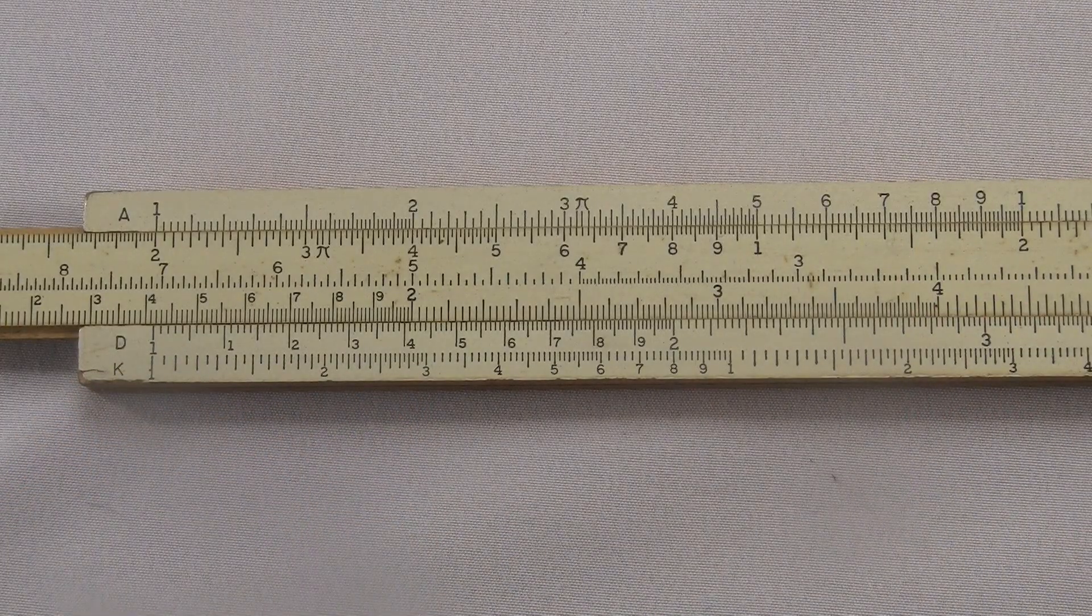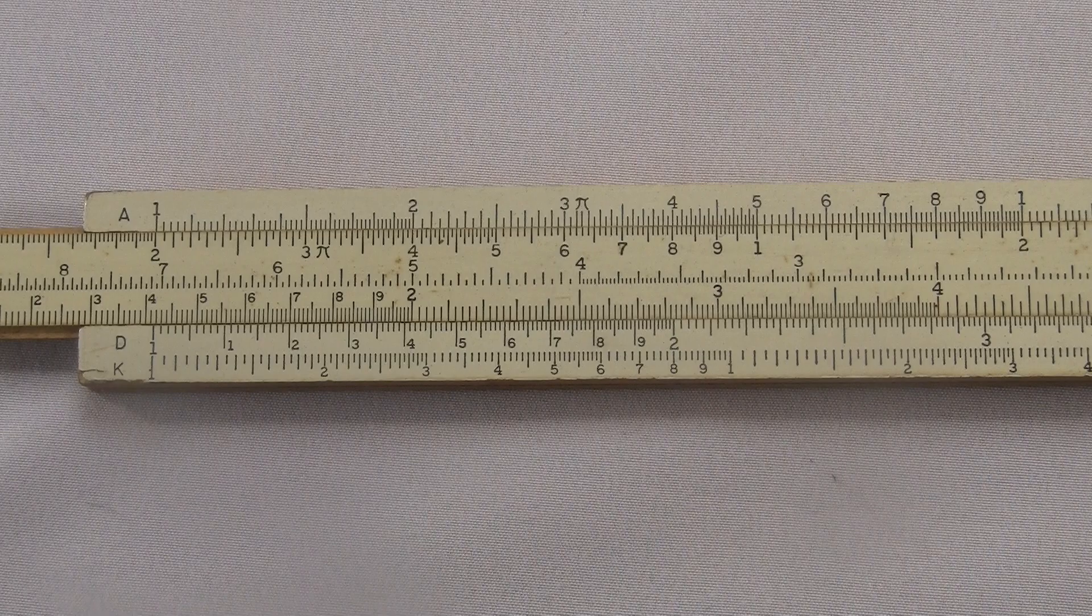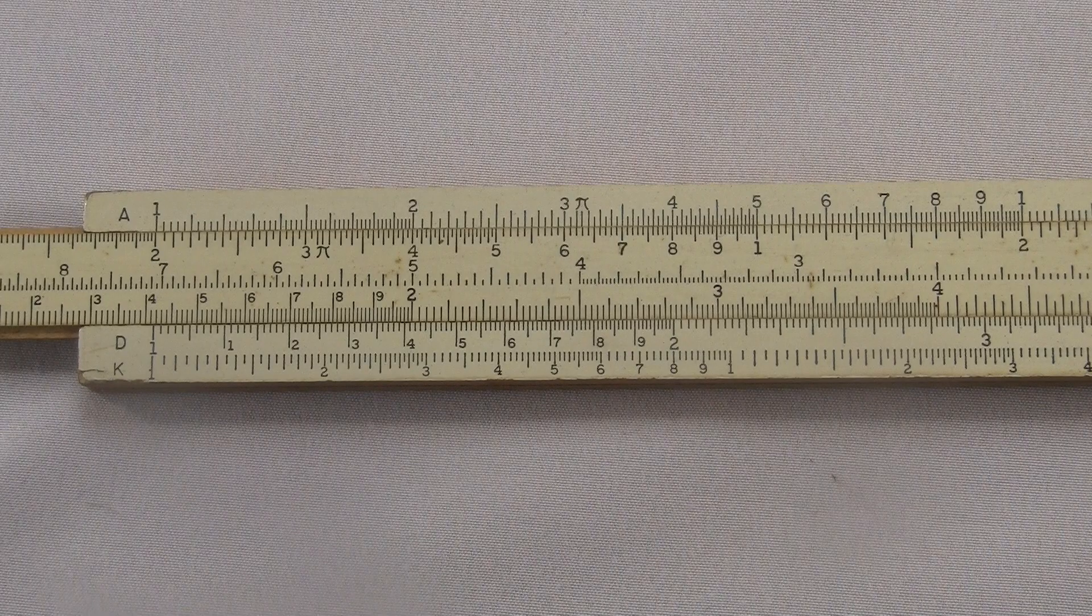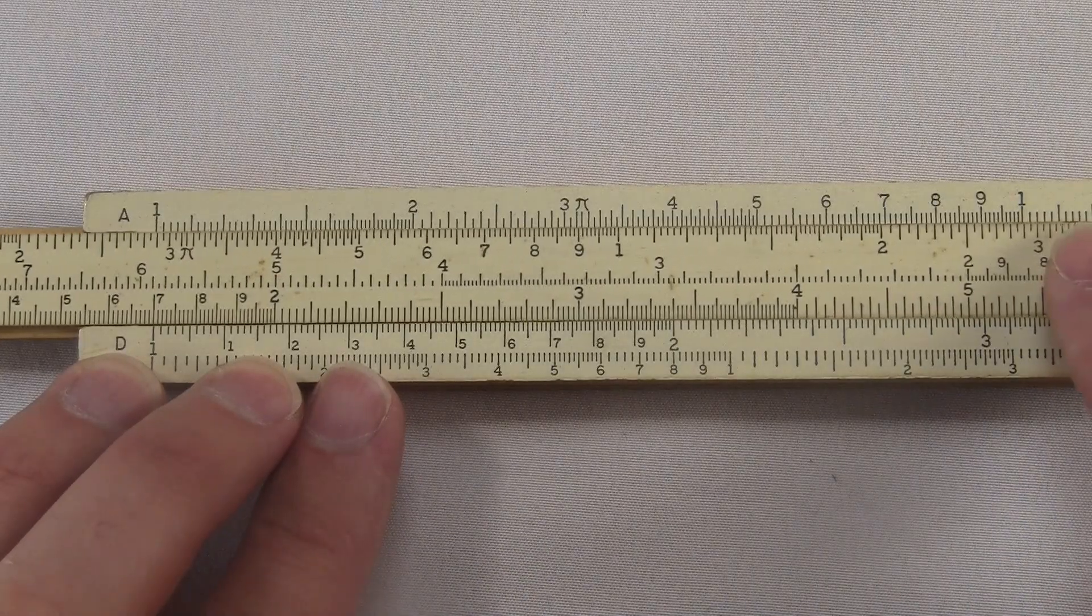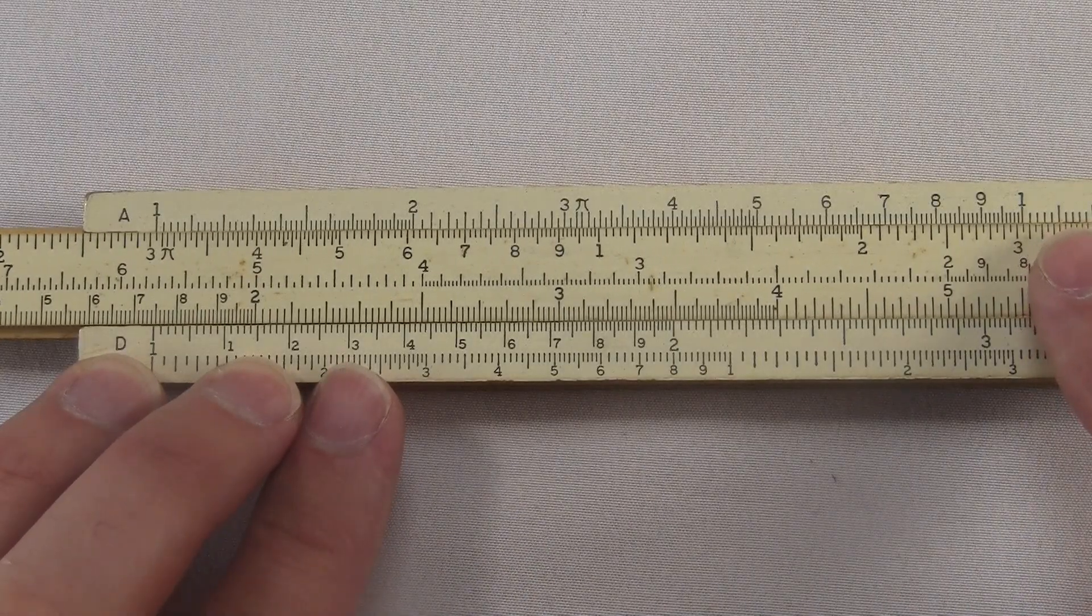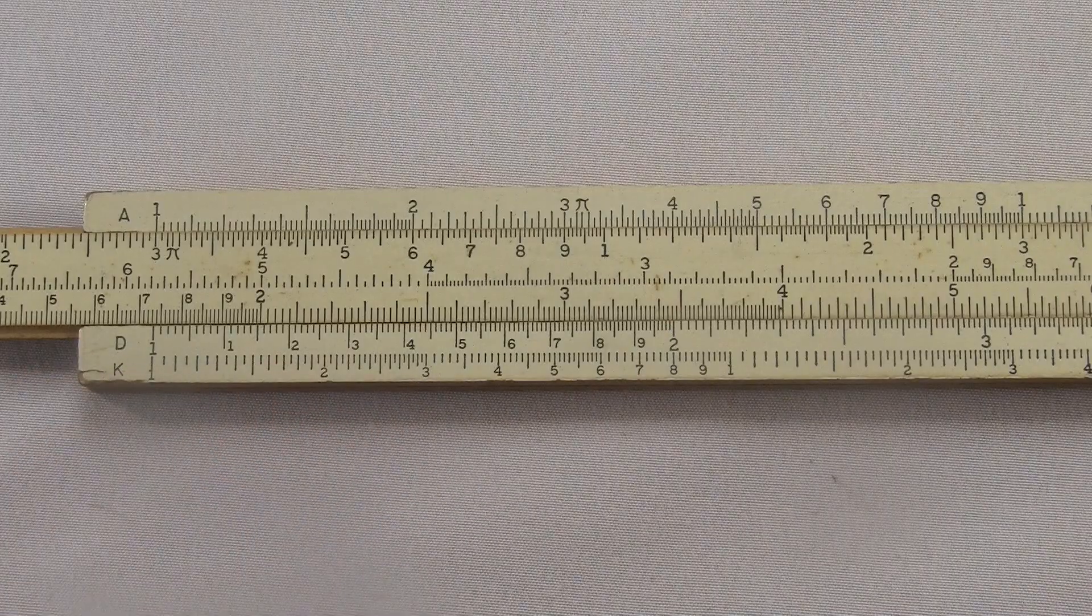And watch this. When I slide it a little bit, I slide this thing so now the one lines up with the two. And you can see every value on the top is being multiplied by two. See, one is lined up with two. Three is with the six. Four with the eight. Right? If you slide it a little bit more, now everything is being multiplied by three. That's how the slide rule works.